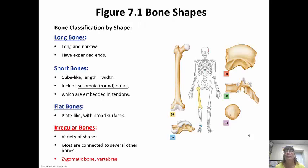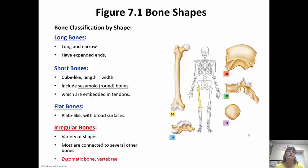Bones can be classified by shape. Long bones are, as the name implies, long — they have expanded ends but are narrow in the middle. Short bones are short, kind of cube-like, with length and width about the same. These include the round bones known as sesamoid bones, which are embedded in tendons.